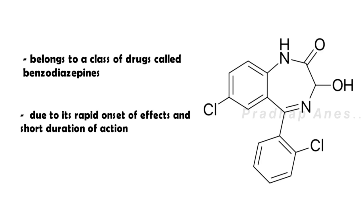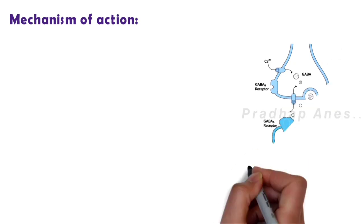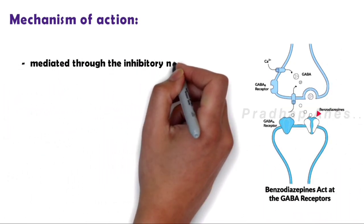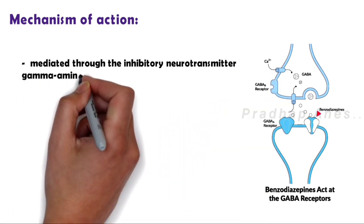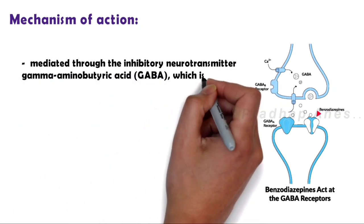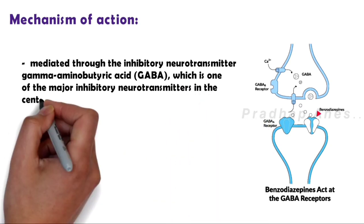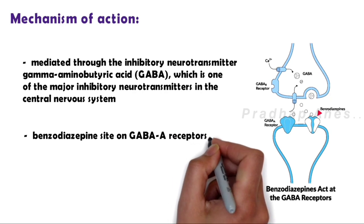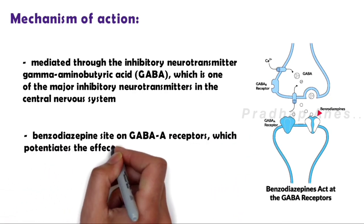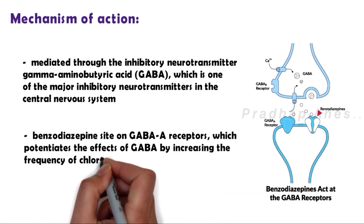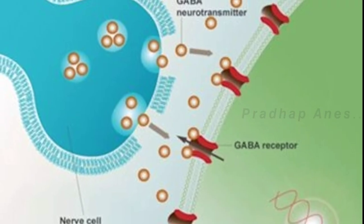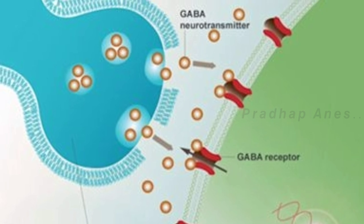Mechanism of action: Like other IV anesthetics, the actions of benzodiazepines such as midazolam are mediated through the inhibitory neurotransmitter gamma-aminobutyric acid, GABA, which is one of the major inhibitory neurotransmitters in the central nervous system. Benzodiazepines bind to the benzodiazepine site on GABA receptors, which potentiates the effects of GABA by increasing the frequency of chloride channel opening. These receptors have been identified in different body tissues including the heart and skeletal muscle, although mainly present in the central nervous system.